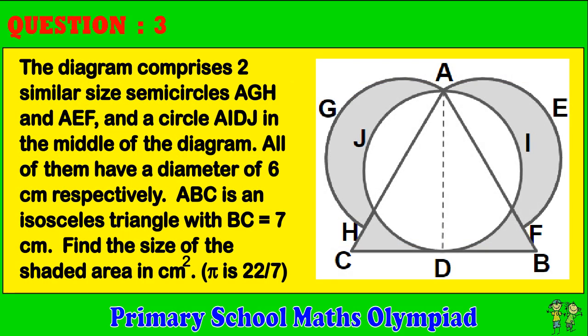Question 3. The diagram comprises two similar sized semicircles AGH and AEF, and a circle AIDJ in the middle of the diagram. All of them have a diameter of 6 centimeters respectively. ABC is an isosceles triangle with BC equals 7 centimeters. Find the size of the shaded area in centimeters squared. Pi equals 22 over 7.